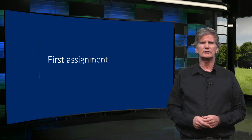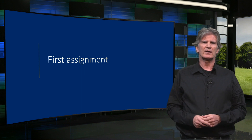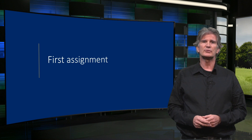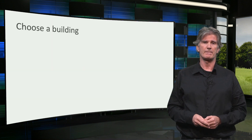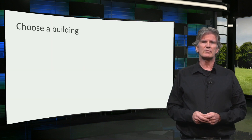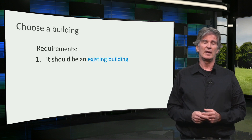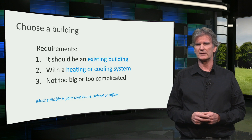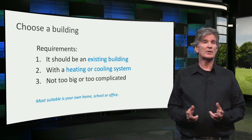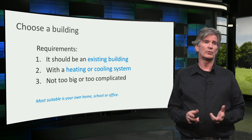As a first assignment, we want you to figure out which energy carriers are used and for which purposes. Therefore, you must choose a building to work with — the building you would like to make zero energy. There are a few requirements: it should be an existing building, it should have a heating or cooling system, and it should not be too big or too complicated. This can be your own house, your school, or your office.